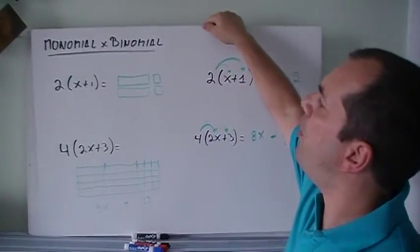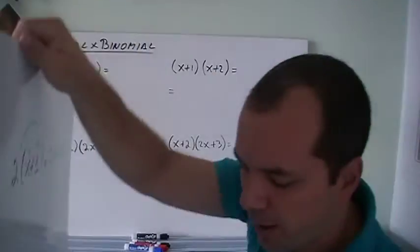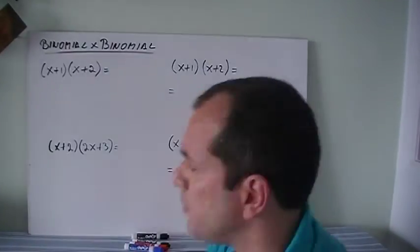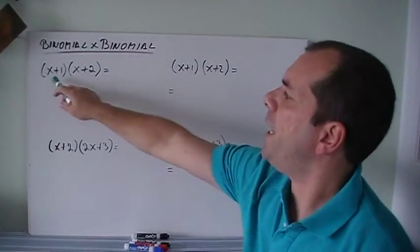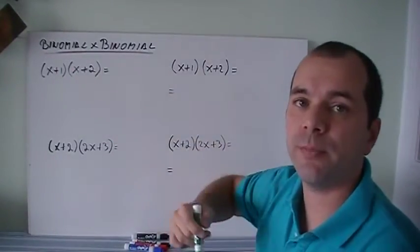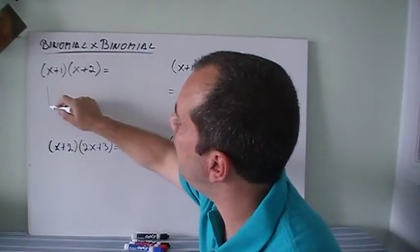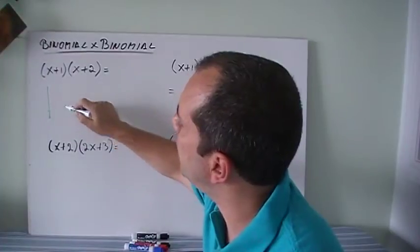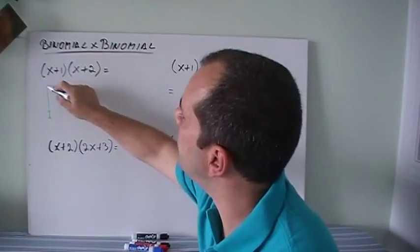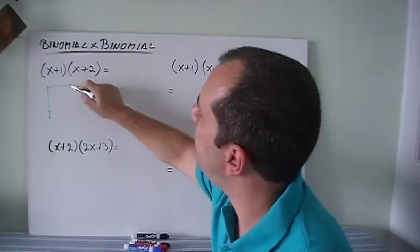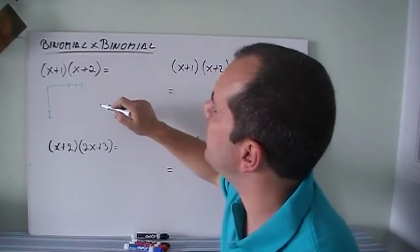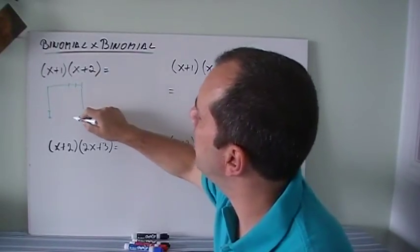So what about if we have a binomial times another binomial? If you've got x plus 1 and x plus 2, we're going to do the same little trick. x plus 1, I'm going to put it going down, x plus 1. And x plus 2, I'm going to put it along: x, I'll make it there, plus 2. And I'm going to draw the lines.